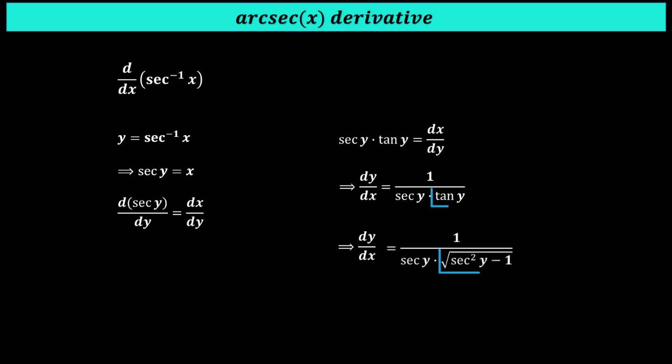Now we will substitute tangent of y by square root of secant squared y minus 1. We have almost done it. Since secant of y equals x, hence replace secant of y by x, and we get dy over dx, or the derivative of inverse secant of x, equals 1 over the product of x and square root of x squared minus 1.